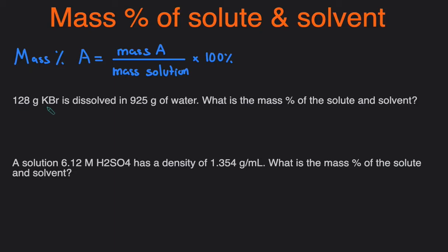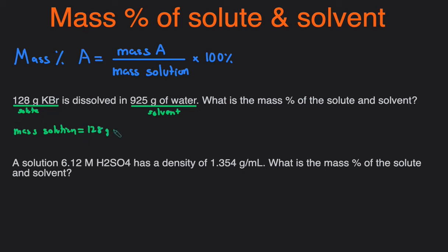In this first example we have 128 grams of KBr dissolved in 925 grams of water, and it's asking us what's the mass percent of the solute and mass percent of the solvent. KBr is what's being dissolved, so that would be the solute, and water is going to be the solvent — water is the universal solvent. We can also confirm KBr is the solute because there's less of it. So we can next determine the mass of the solution, which is the two masses added together: 128 grams plus 925 grams.